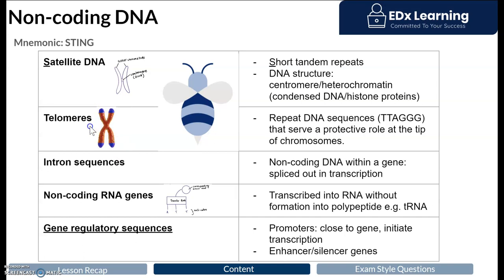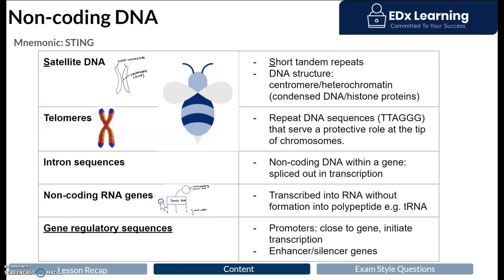Even within coding genes, we have intron sequences. Within a gene, you have certain series of bases that don't code for anything at all, and they're often removed from the RNA after it's produced in transcription. Some non-coding DNA is transcribed to RNA but not translated into a polypeptide. A prime example of this is transfer RNA — tRNA picks up amino acids from the cytoplasm of cells and donates them to the growing polypeptide chain on the ribosome.